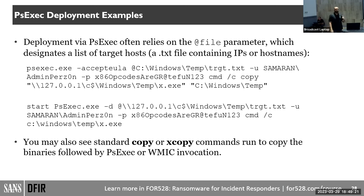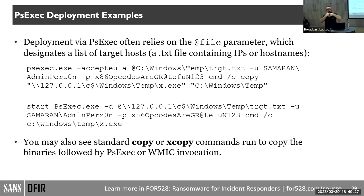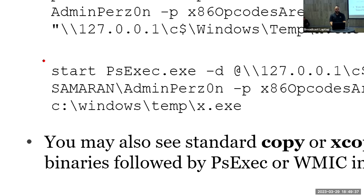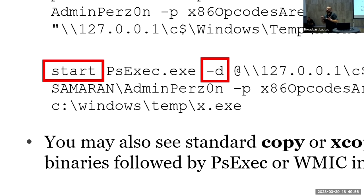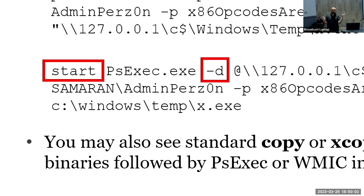This slide shows how PSExec might be used for deployment — specifically pushing the ransomware cryptor throughout your organization. In the command example, we have the 'start' command starting a new window session, psexec.exe, and the '-d' flag — that means run the following commands but don't wait until they're done. Because if you're pushing ransomware to a thousand hosts, you don't want to wait for each one to finish. The '@' sign tells PSExec: this is a text file and each line is a target host.